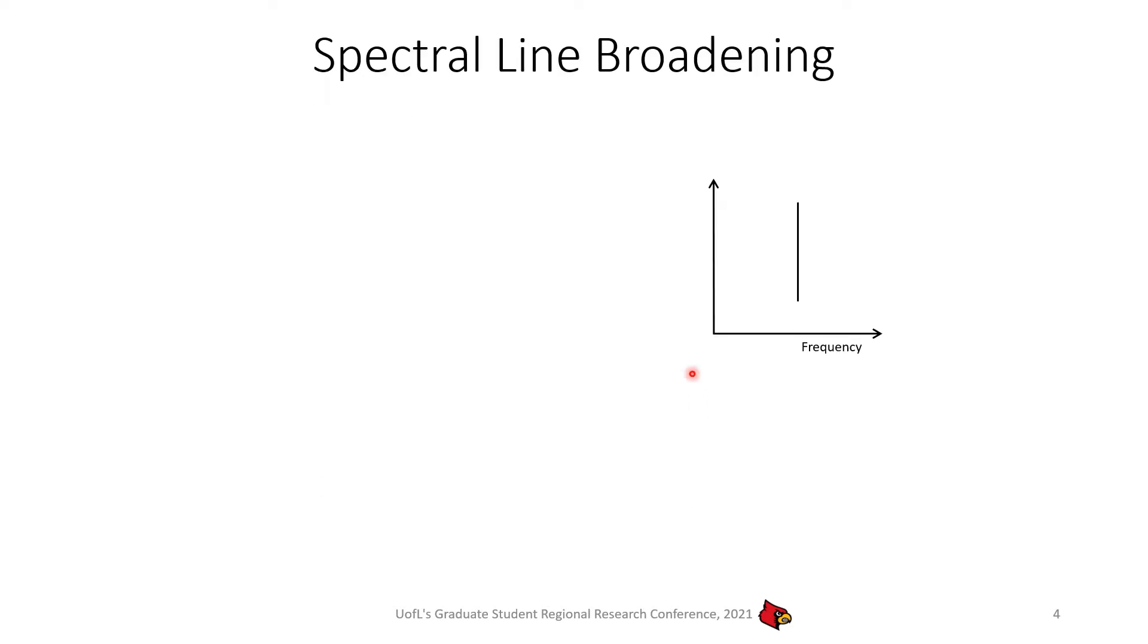Spectral line broadening. Spectral lines are actually the fingerprints of a molecule or atoms. If we want to detect a molecule in a star or in the atmosphere, we need to know their spectral lines.